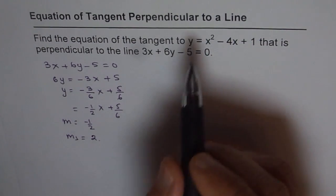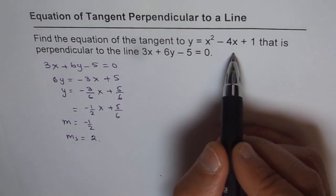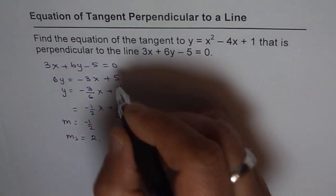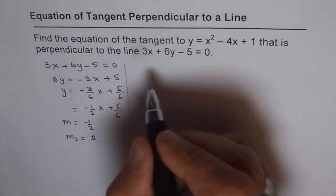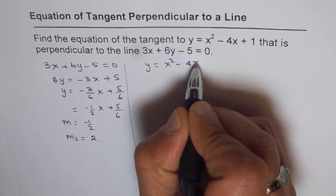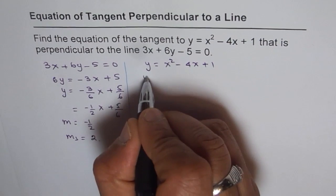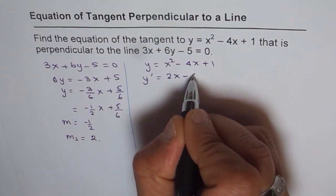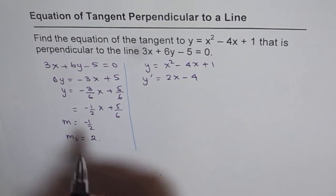So we are looking for a point now on the curve which can give us a slope of 2. Let's work with the equation. Given to us is y = x² - 4x + 1. So the derivative will give us the slope. The derivative of this is 2x - 4, and we want this derivative to be 2.